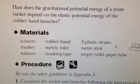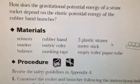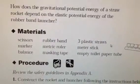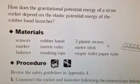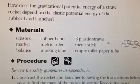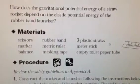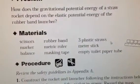The materials you'll need for a soaring straws lab are scissors, marker, balance, rubber band, metric ruler, masking tape, three plastic straws, meter stick, and empty toilet paper tube.